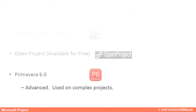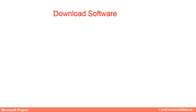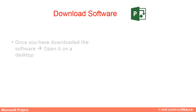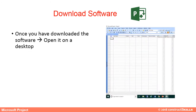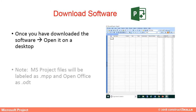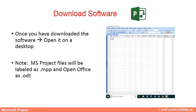In this guide we will be learning how to use MS Project. Upon downloading the software, open it on the desktop — look out for the P sign. MS Project files are labeled as .mpp and Open Office files as .odt.